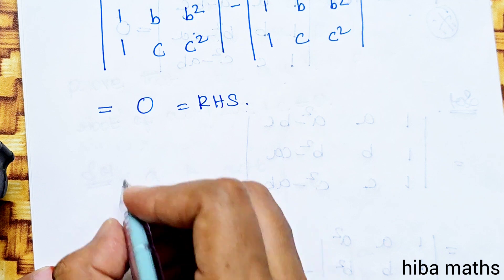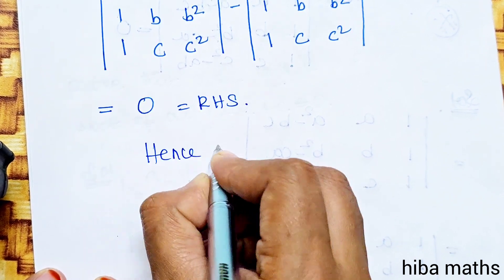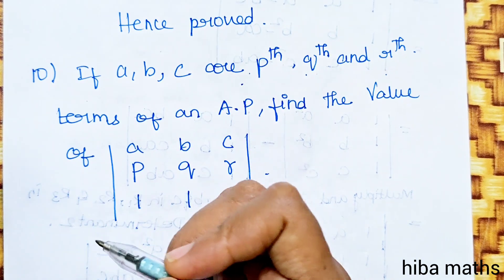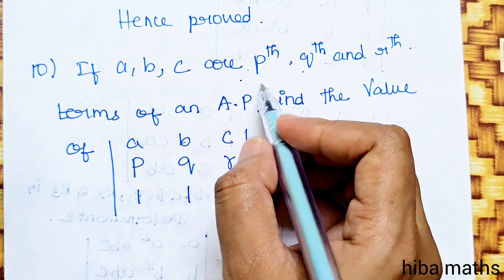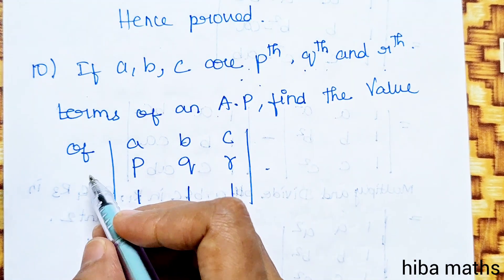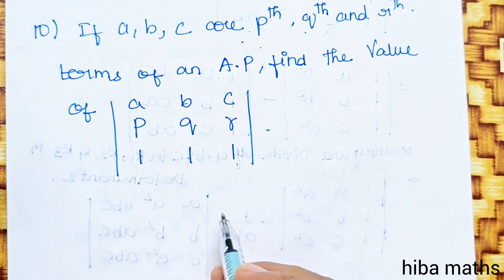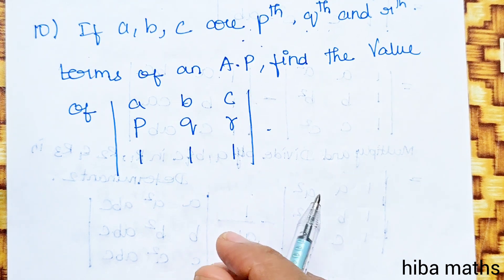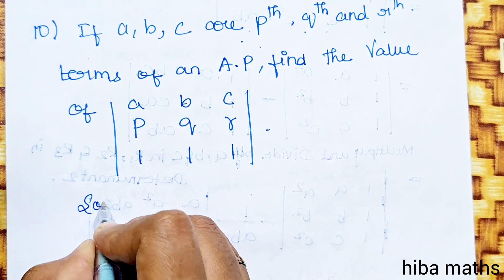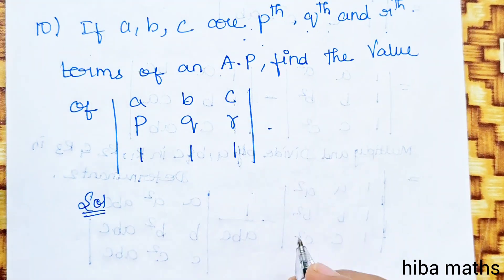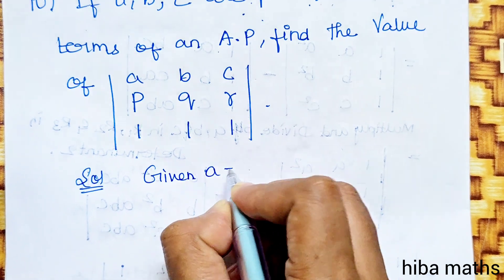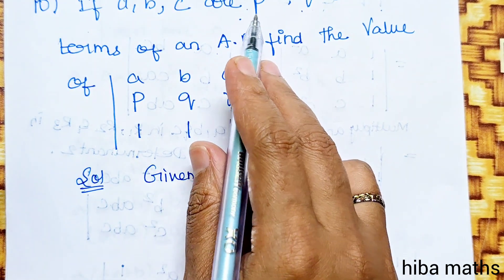Understand that. If you have any questions, please write in the comment section. Next question — question 10: if A, B, C are the P-th, Q-th, R-th terms of an AP, find the value of the determinant with rows A, B, C; P, Q, R; 1, 1, 1. ABC is equal to AP.